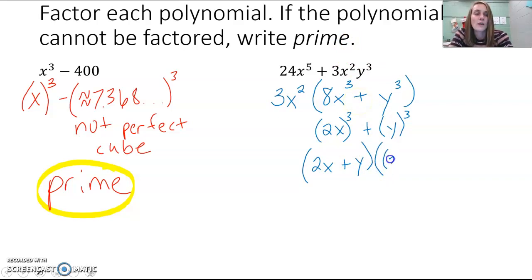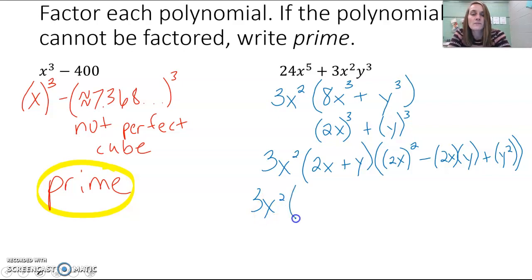And then we square the first term. So we're going to square 2x. Now it's the opposite sign here. You multiply the two terms together. And then you square the last term. And then don't forget about that greatest common factor of 3x squared that was out in the front. So we have 3x squared times 2x plus y times 2x squared, which would be 4x squared. Right, square each of those. 2x times y, so negative 2xy and y squared.